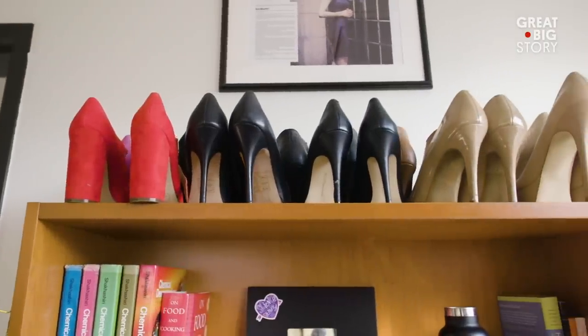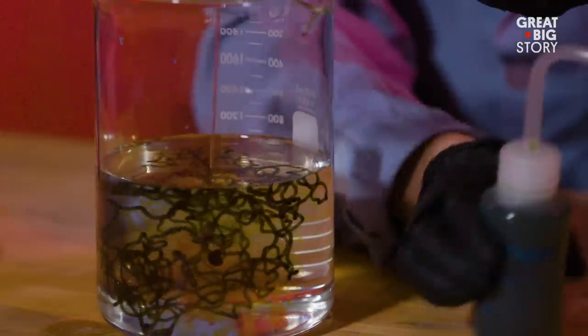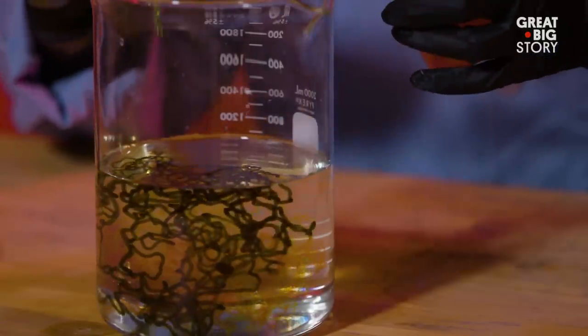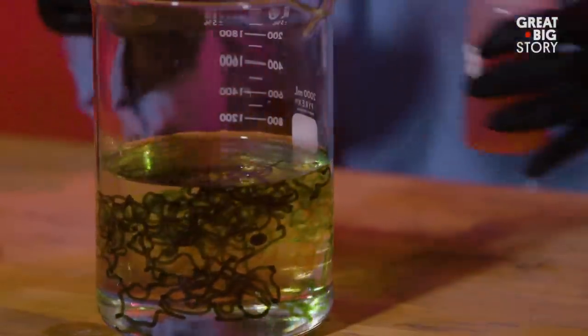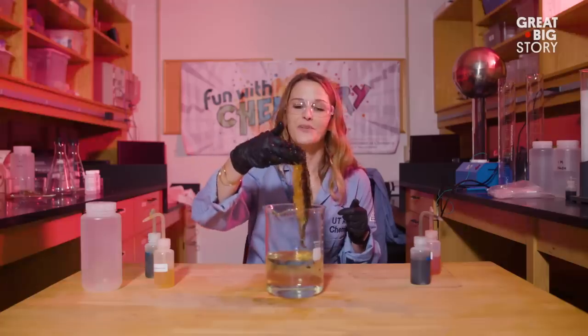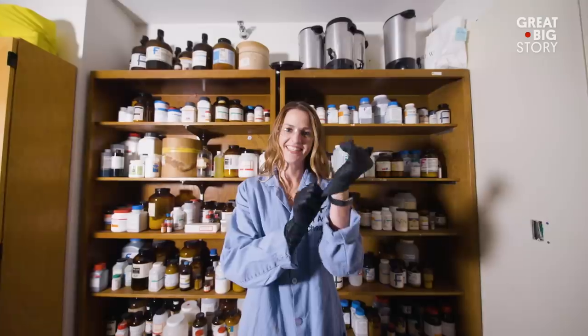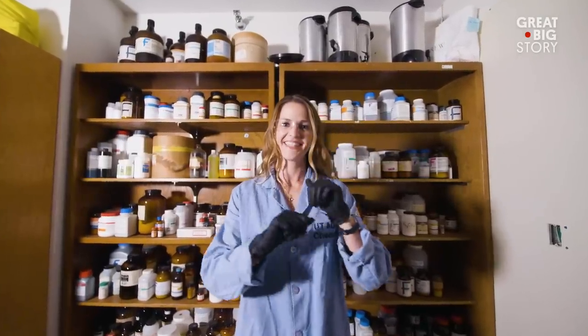As the alginate hits the calcium chloride, the alginate would prefer to be with the 2 plus charge calcium instead of the 1 plus charge sodium and what happens is we form gummy worms. Doesn't matter what you look like, any human can be a scientist.